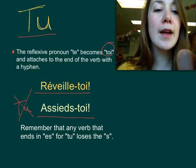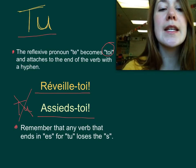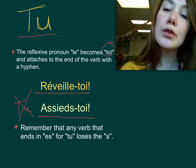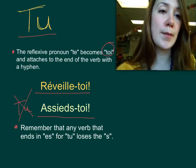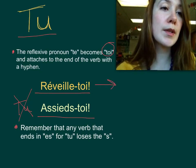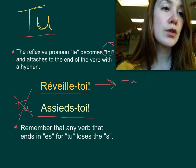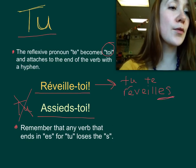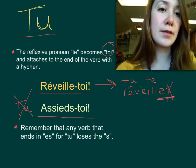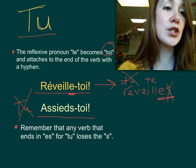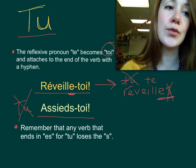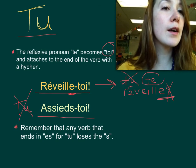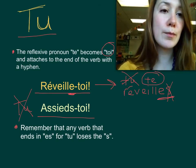Remember that any verb that ends in -es for tu loses the s in the command form, in the imperative. So normally we would say tu te réveilles with an -es ending. In the command form, we're going to take that s off — notice that it's missing. And we're not going to use the subject pronoun, just like with nous and vous, and our reflexive pronoun tu becomes toi.